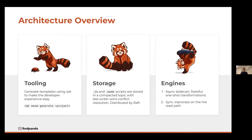There are a couple of flavors of the execution engine. The first is an asynchronous version for stateful one-shot transformations — this is currently out in tech preview in Red Panda, and we welcome feedback on the API and developer experience so we can iterate and improve it over time.